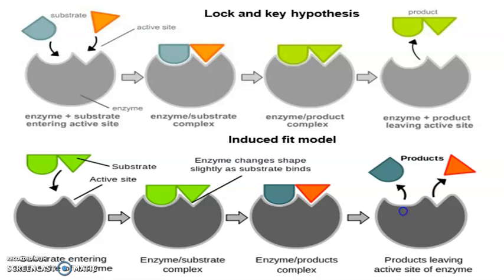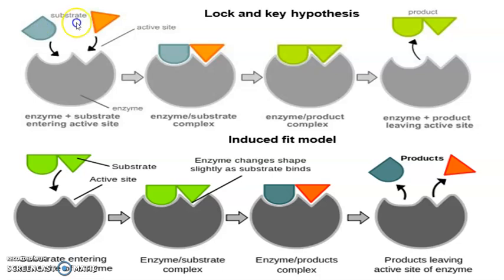The way this used to be taught was that substrates fit exactly into the active site, referred to as the Lock-and-Key hypothesis — meaning only specific substrates could fit in the active site to undergo a reaction. In the last decade or so, scientists have said that's not really how it works. Some substrates may not fit perfectly with the active site but can push their way in, making the active site conform to their shape — that's called the induced fit model. So enzymes are mostly specific, but some substrates can force their way in and make the enzyme conform to them.